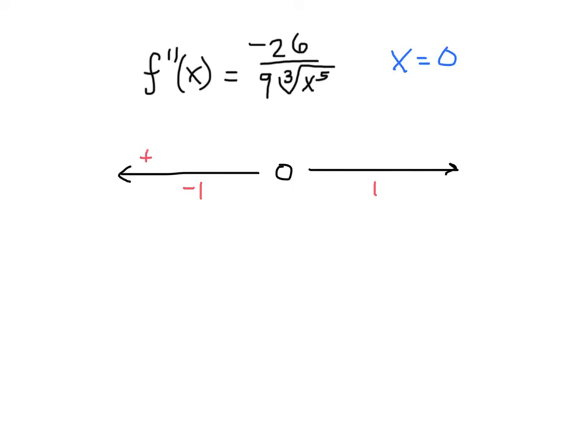So for my sign diagram, I'm actually going to indicate that on this side of the number line, the second derivative is always positive.